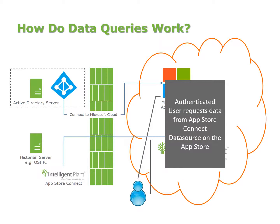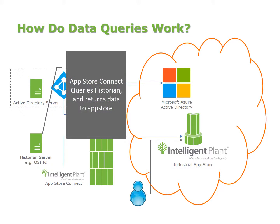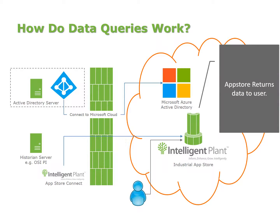The user is going to make a data request — asking for some data from the Pi server, which is usually the Historian. They're on the internet but requesting data from this Historian, having been given access by the administrator. They request some data from the Pi server, and the App Store forwards that request to App Store Connect at its site. App Store Connect then queries the Historian locally and returns the data back to the App Store.